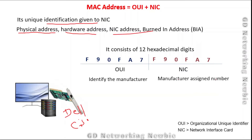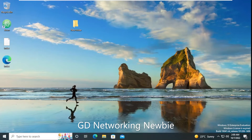If you want to find out the MAC address and its OUI, or to find out the manufacturer, we first need to find the MAC address of our computer. Then we can use multiple websites to find out both the manufacturer part (OUI) and the NIC part of our MAC address.